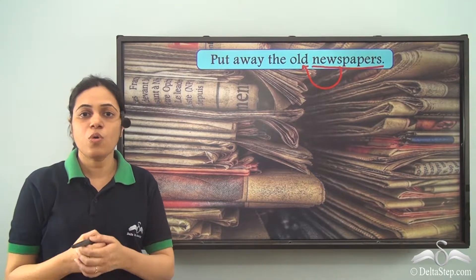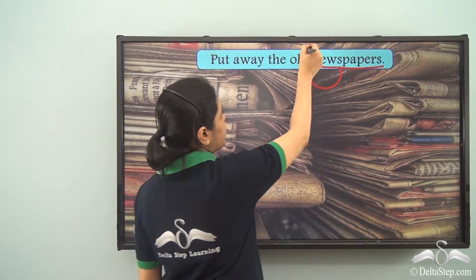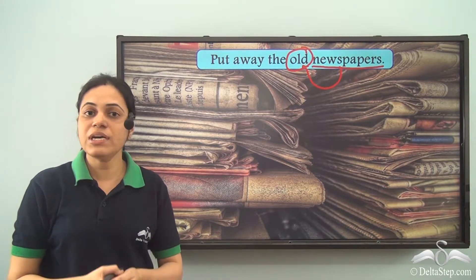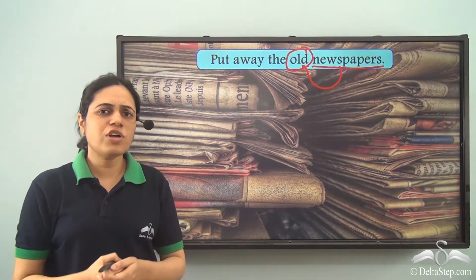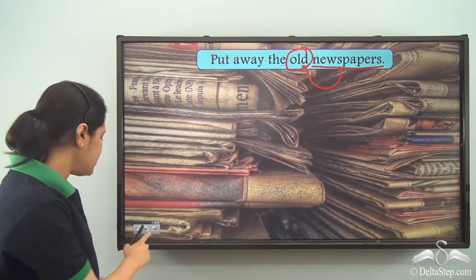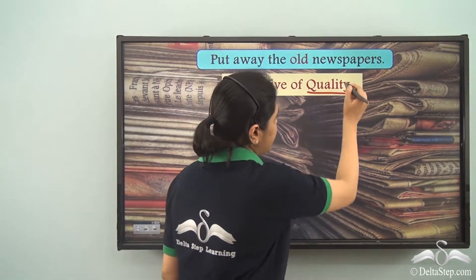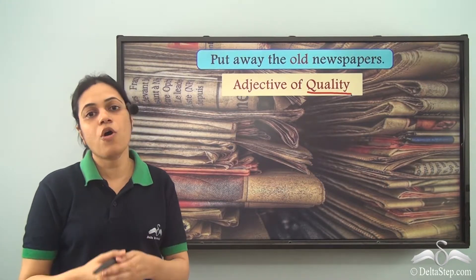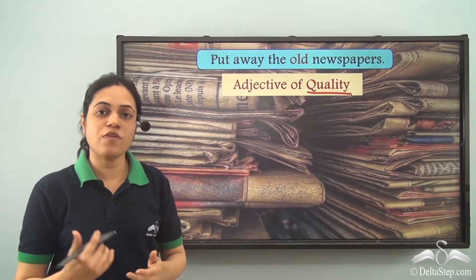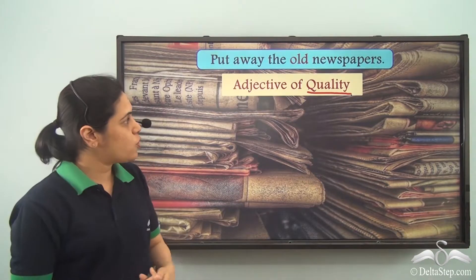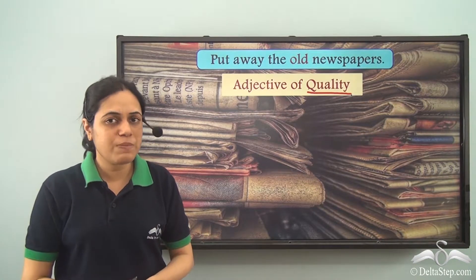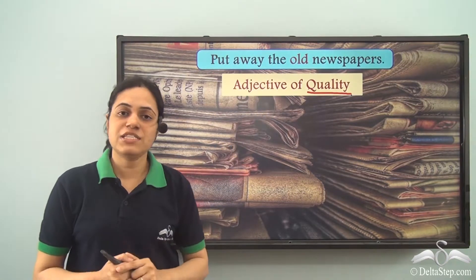How are the newspapers? Old. So old is an adjective — it is telling us about the condition of the newspapers. So what kind of adjective is it? It is an adjective of quality, because adjectives of quality tell us about the color, shape, size, or condition of a noun or pronoun. The word old is telling us about the condition of the newspapers, so it is an adjective of quality.